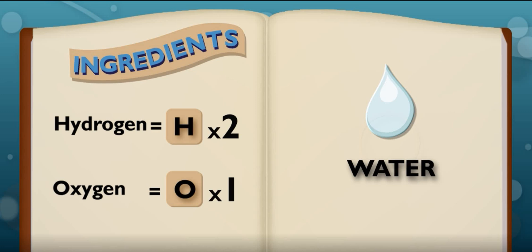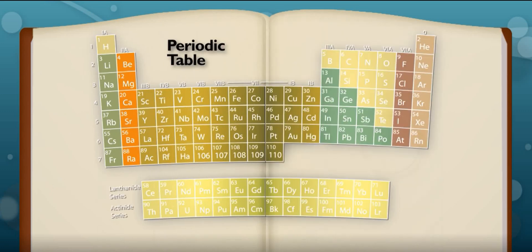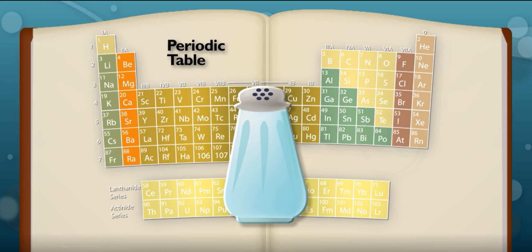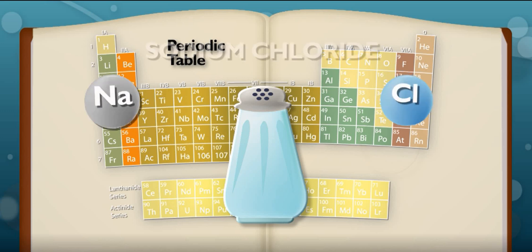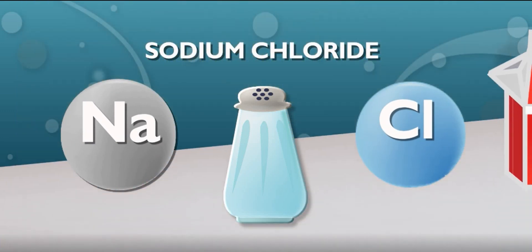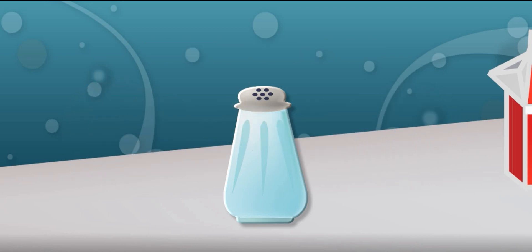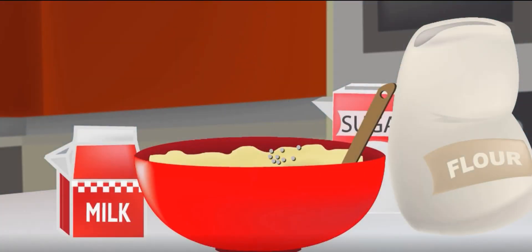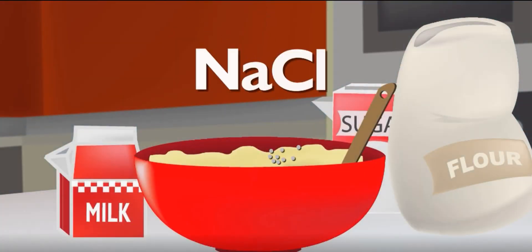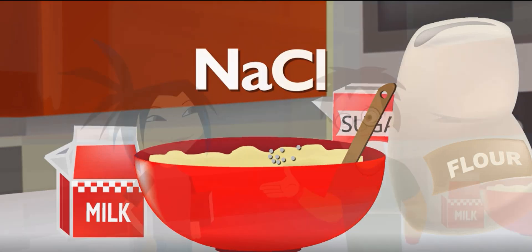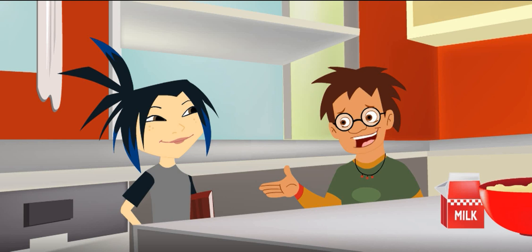Are there chemical formulas for everything? Every compound, yes. Salt is a compound, too. It's called sodium chloride because it's made from the elements sodium and chlorine. So its chemical formula shows the symbols for those two elements together: NaCl. Chemical formulas really are like recipes. You were right — the cake is like a compound.